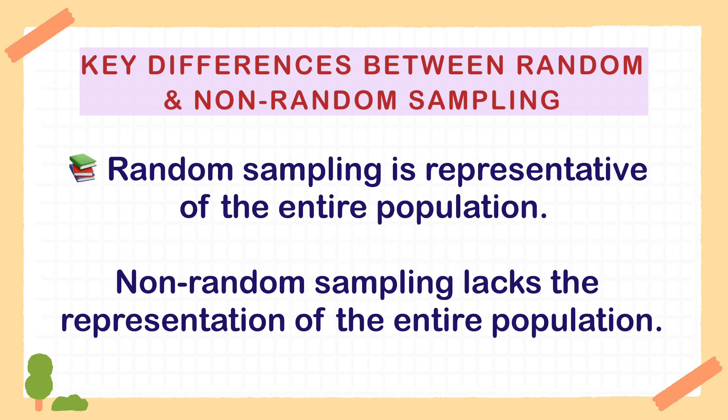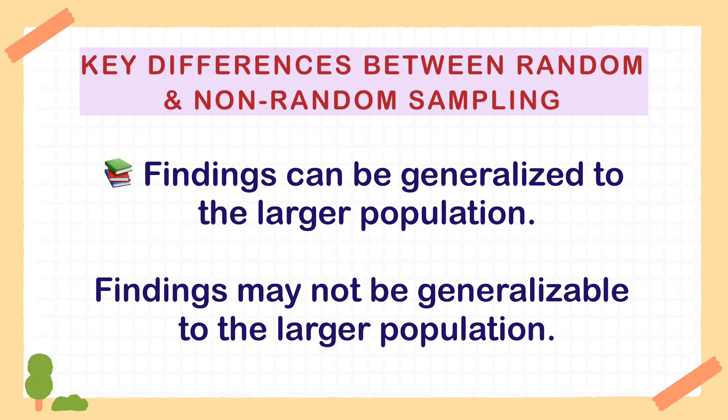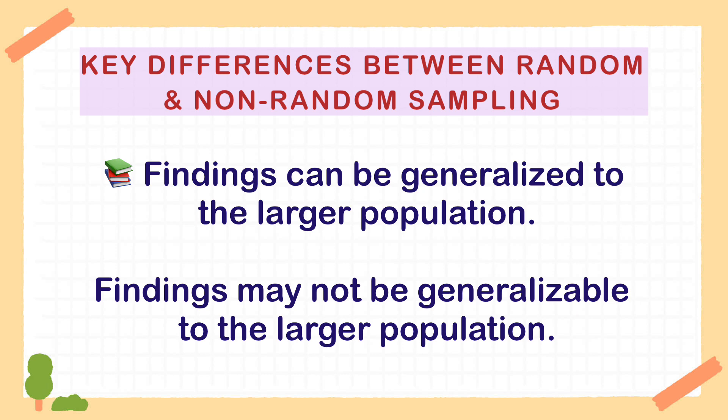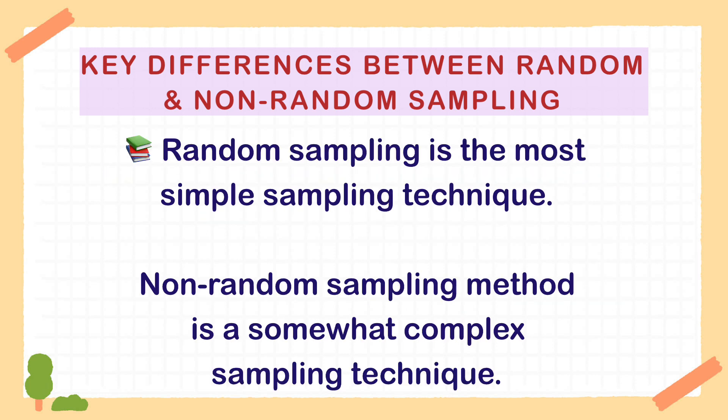Random sampling is representative of the entire population, whereas non-random sampling lacks the representation of the entire population. In case of random sampling, findings can be generalized to the larger population. Whereas findings may not be generalized to the larger population when using non-random sampling method. Random sampling is the most simple sampling technique, but the technique of non-random sampling is somewhat complex.